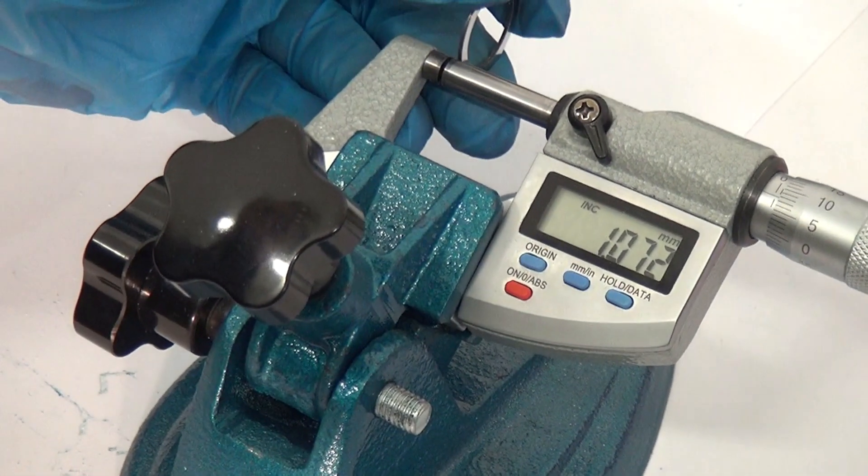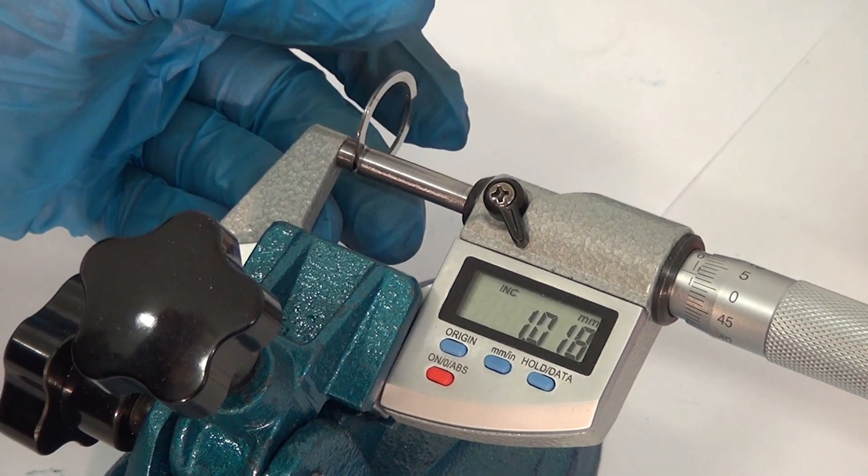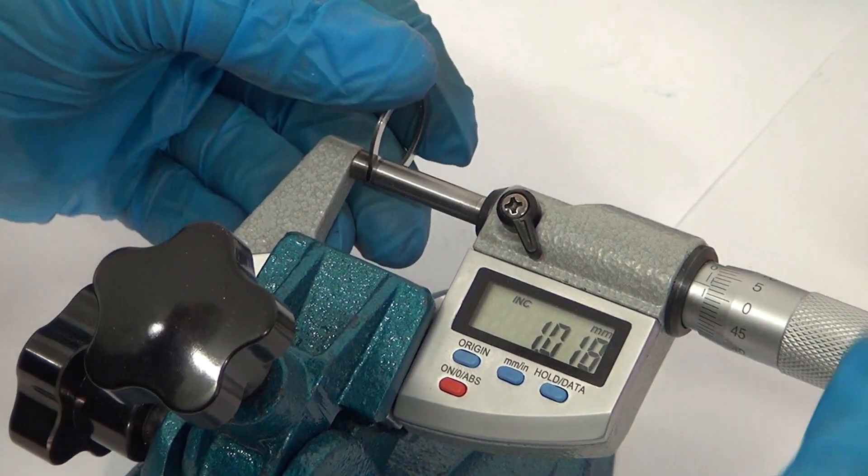Carry out control measurements using a micrometer gauge. The result is 1.018 millimeters. This means that the 5 micron set have been successfully polished off.